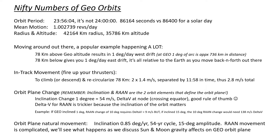But if you want to move around out there, it's not that hard. The magic number is 78 — that is the altitude difference above or below geo where you can induce a one degree per day drift. If you're above, you'll drift to the west; if you're below, you'll drift to the east, assuming a circular orbit at that dimension. In geo, one degree of arc is about 736 kilometers. The magic number is 78 — also the year I graduated from the Air Force Academy.